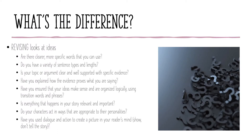So what's the difference between revision and editing? In short, revision looks at ideas. Editing looks at the mechanics. With revision, you're looking at whether there are clearer or more specific words you can use, whether you have a variety of sentence types and lengths, whether your topic or argument is clear, well supported with specific evidence, and whether you've explained how that evidence proves what you're saying. Have you ensured that your ideas make sense and are organized logically using transition words and phrases?